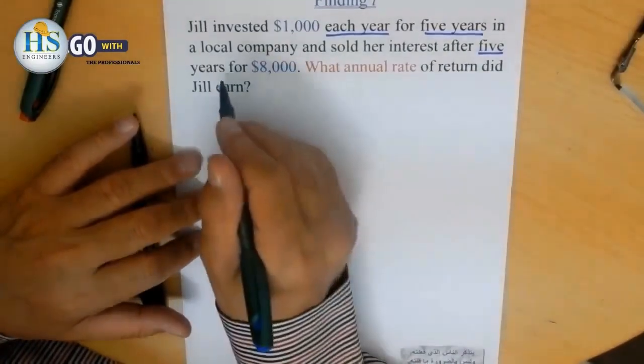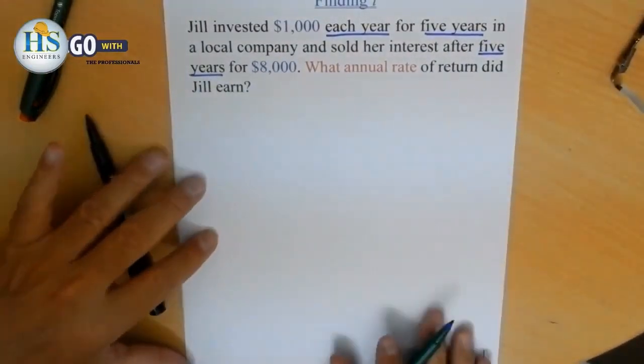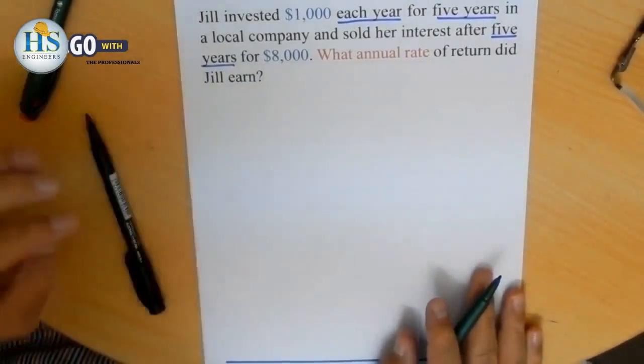After five years, she sold it for $8,000. Or she received $8,000. What annual rate of return did Jill earn?